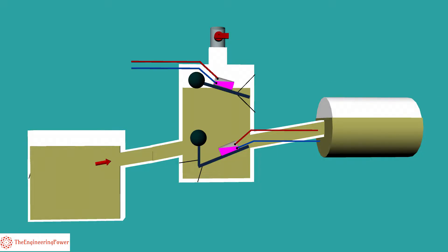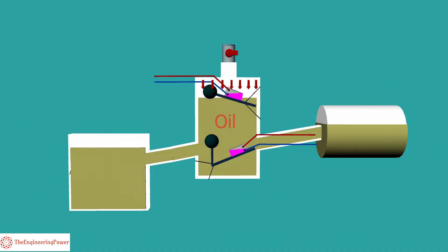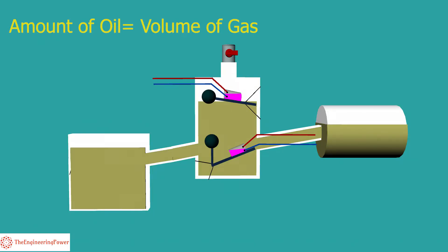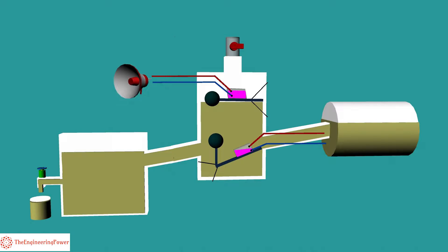These gases move towards the conservator tank through the connecting pipe and are collected in the chamber of the Buchholz relay. As these gases move upwards, they put pressure on the oil present inside the chamber and displace an amount of oil equal to the volume of the gas. This downward displacement of oil causes the attached float to tilt, resulting in closing the mercury switch which triggers the alarm circuit.